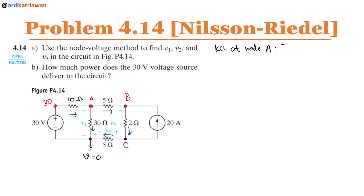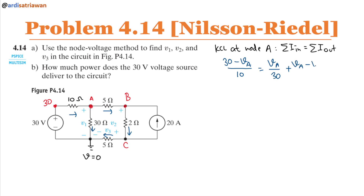KCL states that the sum of currents going in equals the sum of currents going out. We have (30 − Va) divided by 10 going in, and Va divided by 30 plus (Va − Vb) divided by 5 going out.